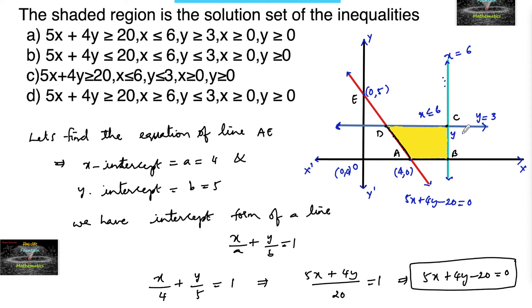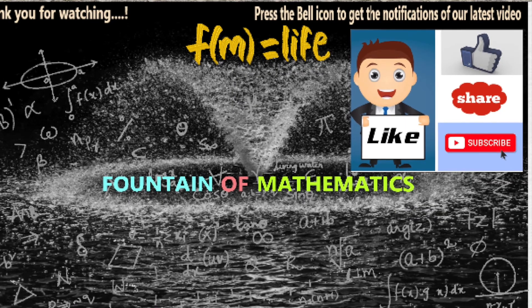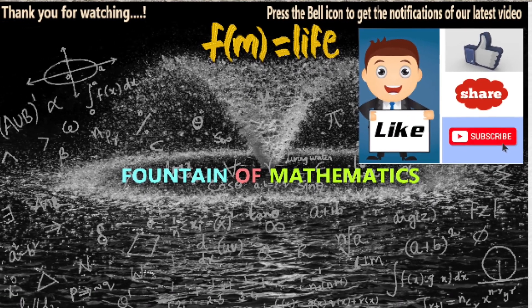So we have y ≤ 3 and 5x + 4y ≥ 20, which corresponds to option C. The region is in the first quadrant, so x ≥ 0 and y ≥ 0, combined with y ≤ 3, x ≤ 6, and 5x + 4y - 20 ≥ 0 (equivalently 5x + 4y ≥ 20). Hence we go with option C. Please like, share, subscribe and support us, thank you.